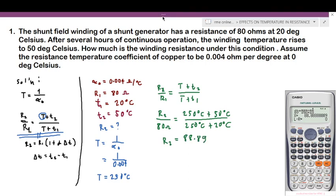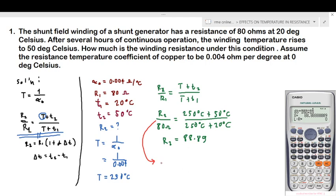So R2 now is equal to 88.89. Let's just check if the shift solve is correct. Let's have the manipulation of this one. So we have R2 is equal to 80 times—